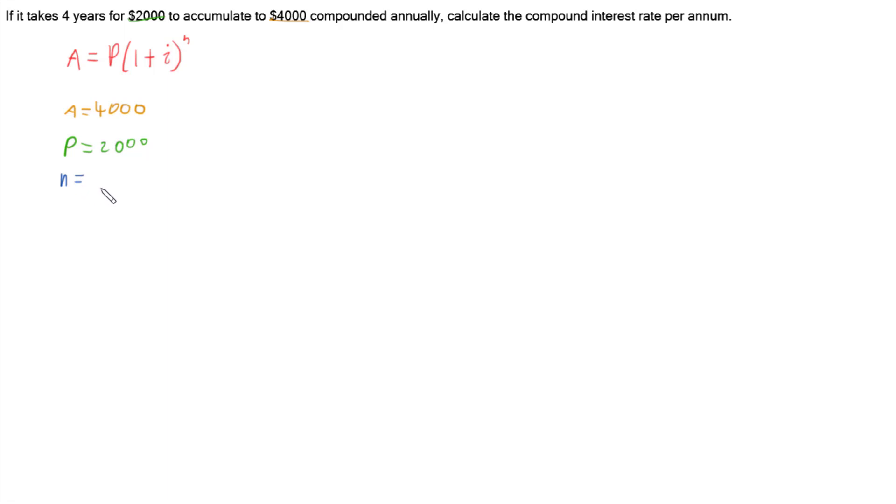N is how many compounding periods. So this is how many years multiplied by how many times compounding each year. So this is compounding annually, so we really only need times by 1, which you don't really need to worry about, because you just get 4. And little i is what we're chasing. We don't know what little i is.